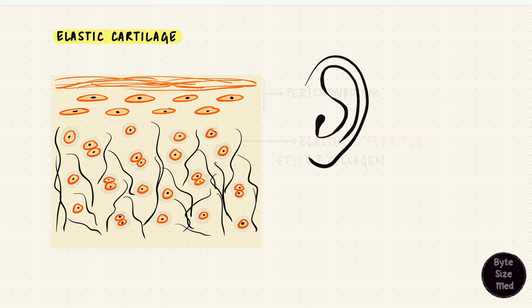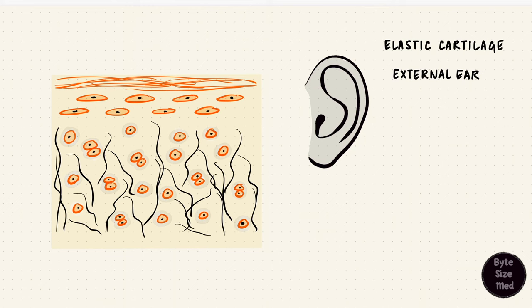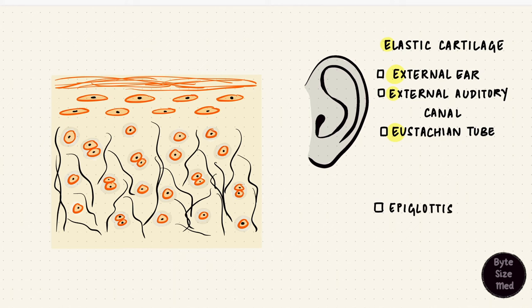A good example would be the external ear. Now I remember it as E for the E's so there's elastic cartilage in the external ear or the auricle, actually the upper part of the pinna, that is elastic cartilage. The external auditory canal, the eustachian tube, and the epiglottis. Of course there are other areas with elastic cartilage, these are just the easy ones to remember.